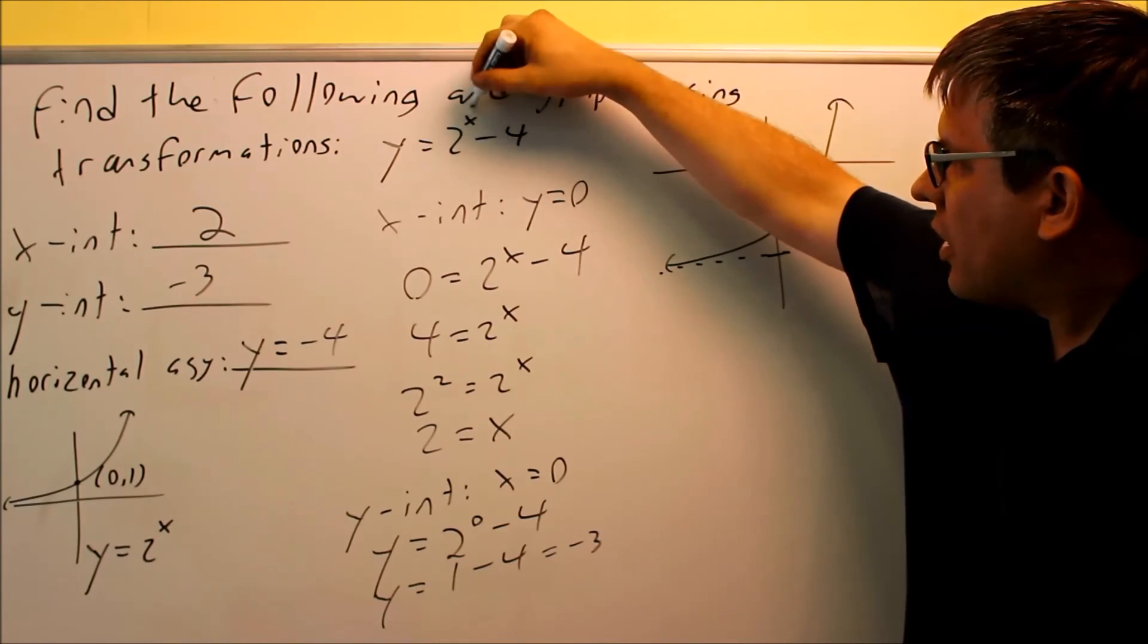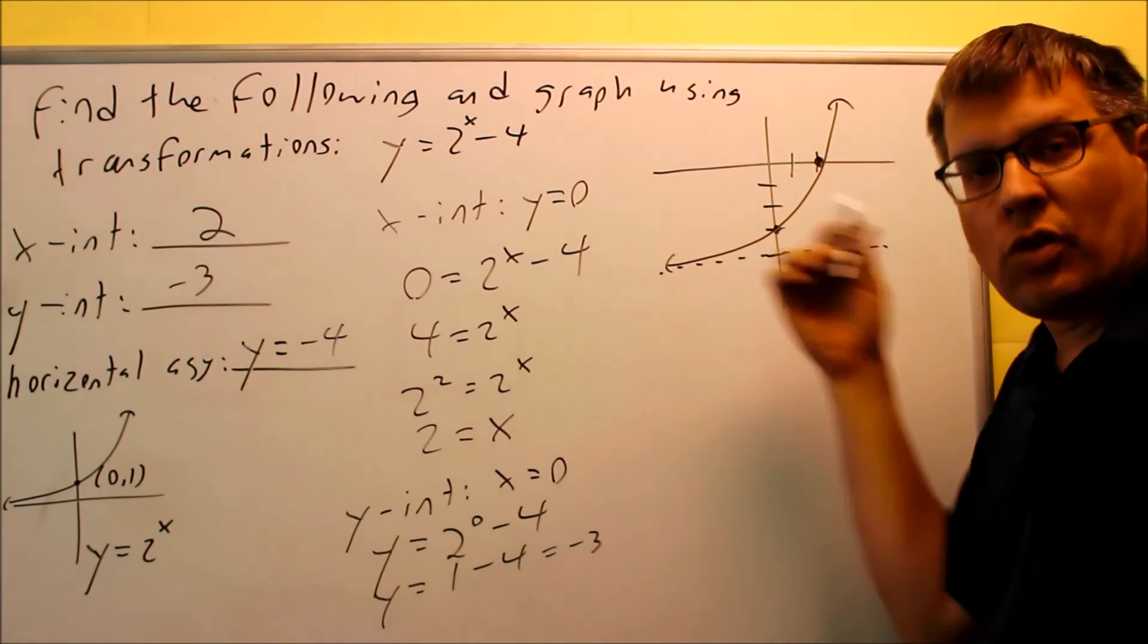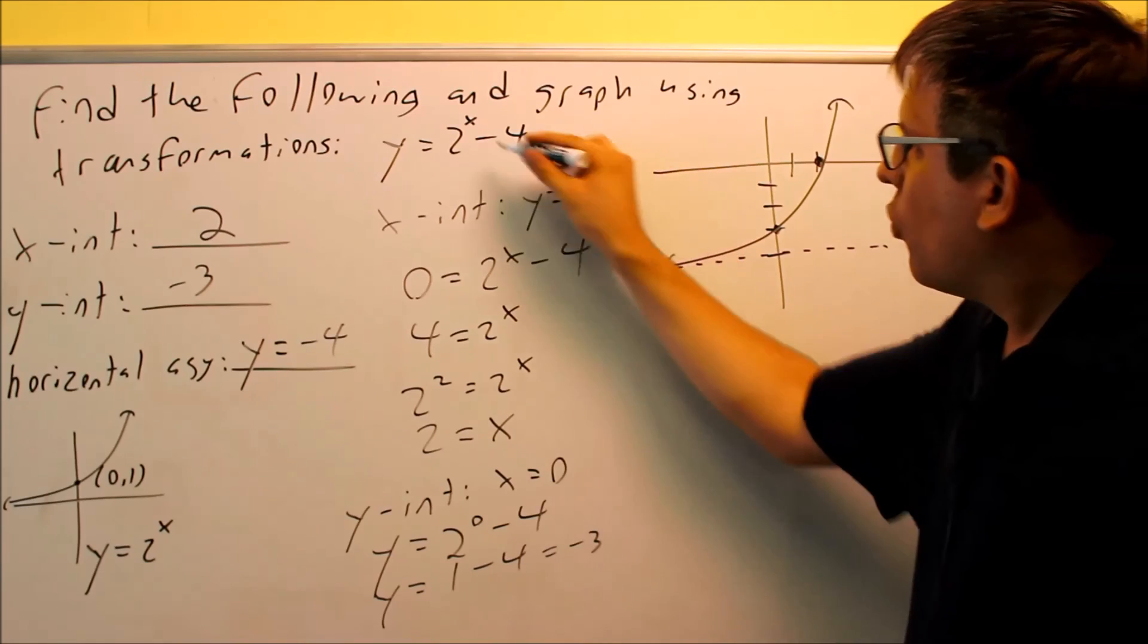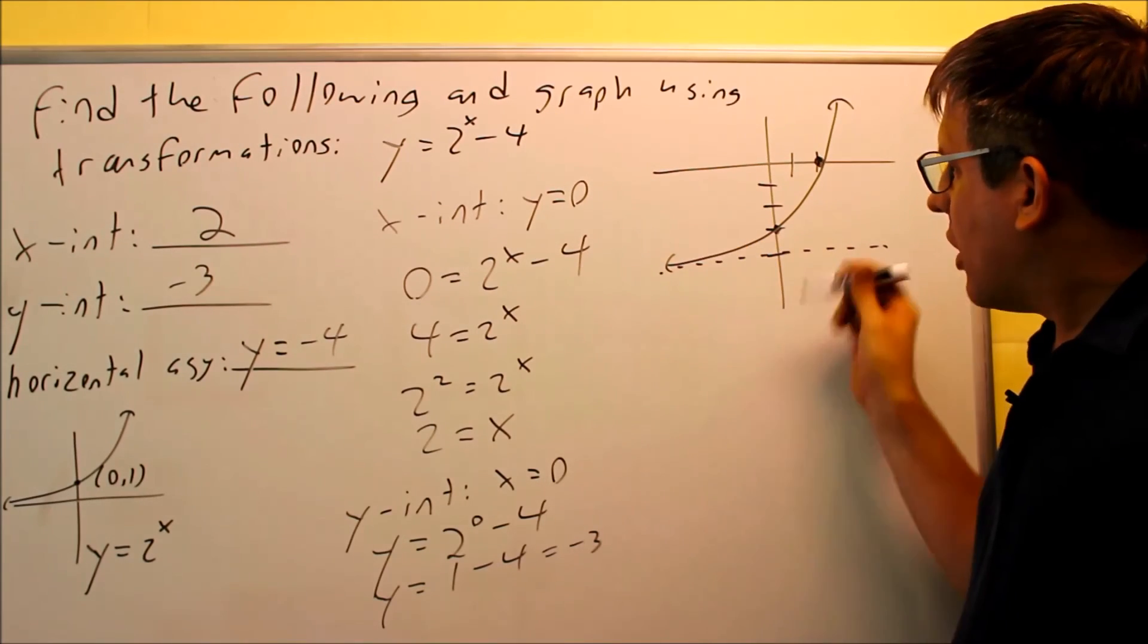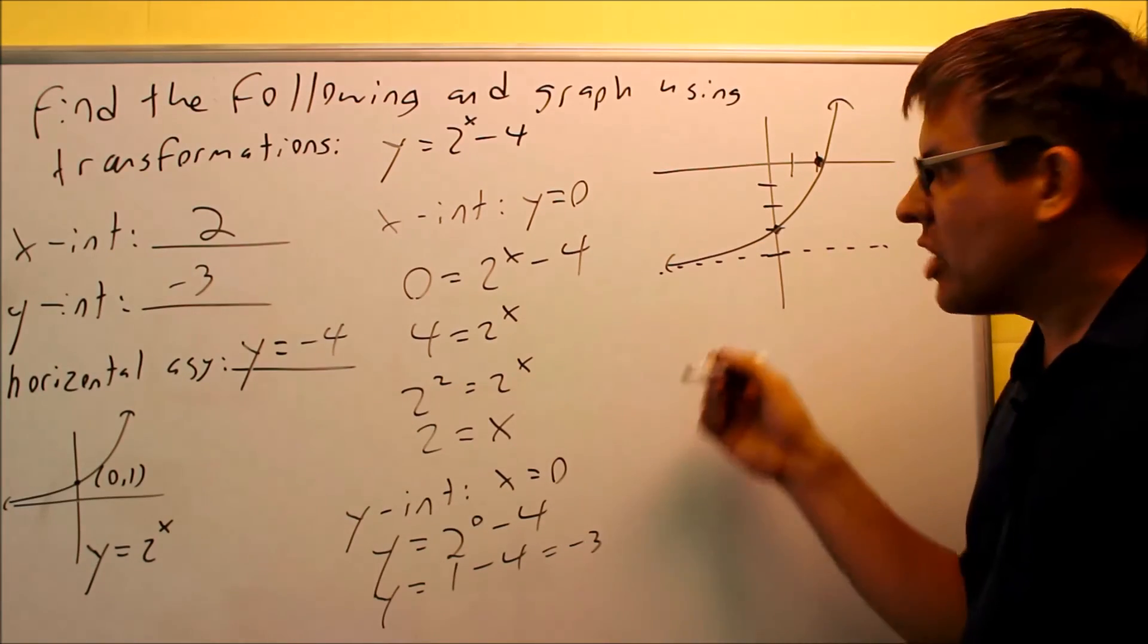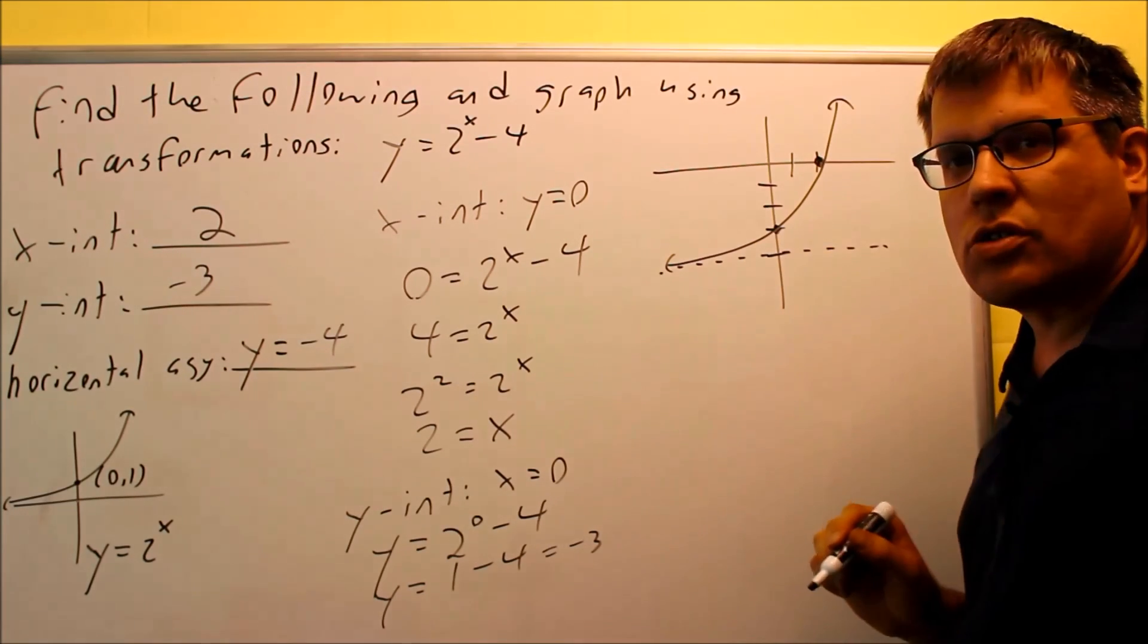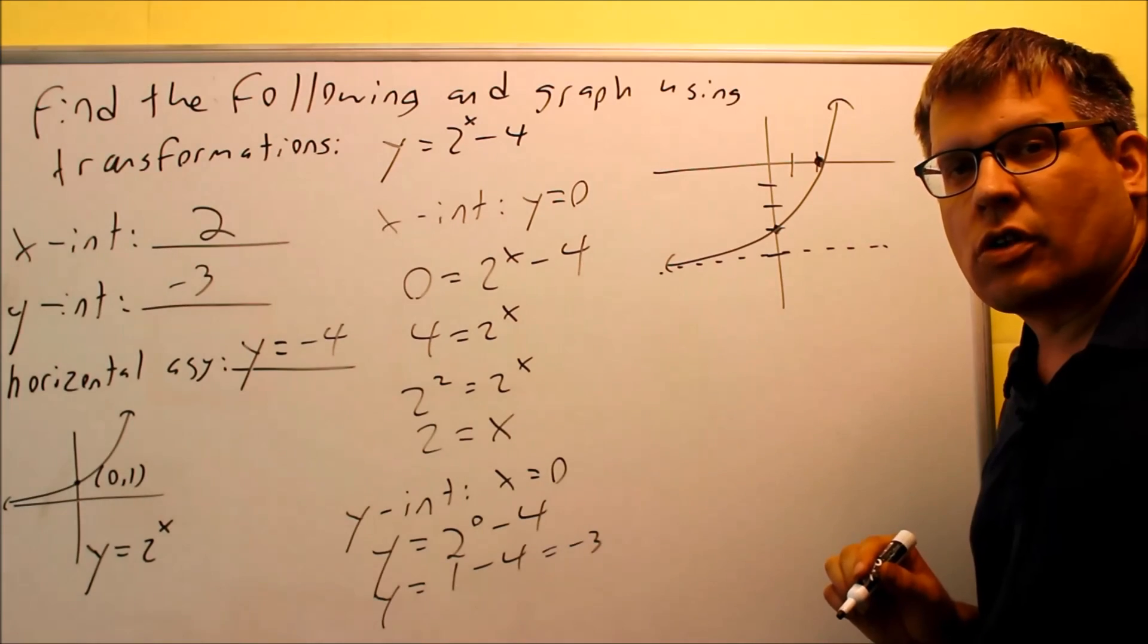Anything that would appear up here in the exponent position, that would be a left and right movement. But this one, we're basically just moving it straight down. And our intercepts will actually tell us again about the shape of the graph. So the intercepts will usually tell us enough information to know what the general curve is going to look like.